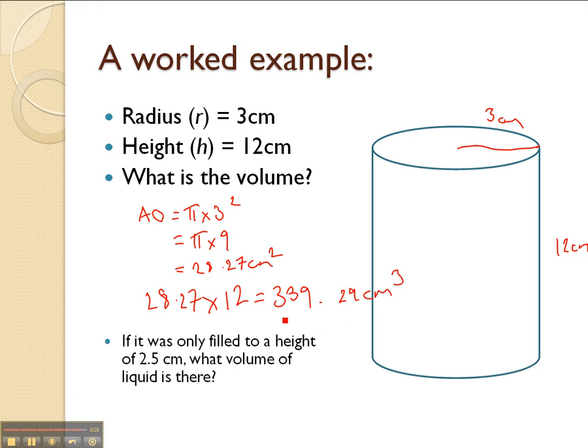That would be the volume of this cylinder, 339.29 centimetres cubed. A good question to think about, if this was a can of coke and it was only filled to a height of 2.5 centimetres, what volume of liquid would be inside it?